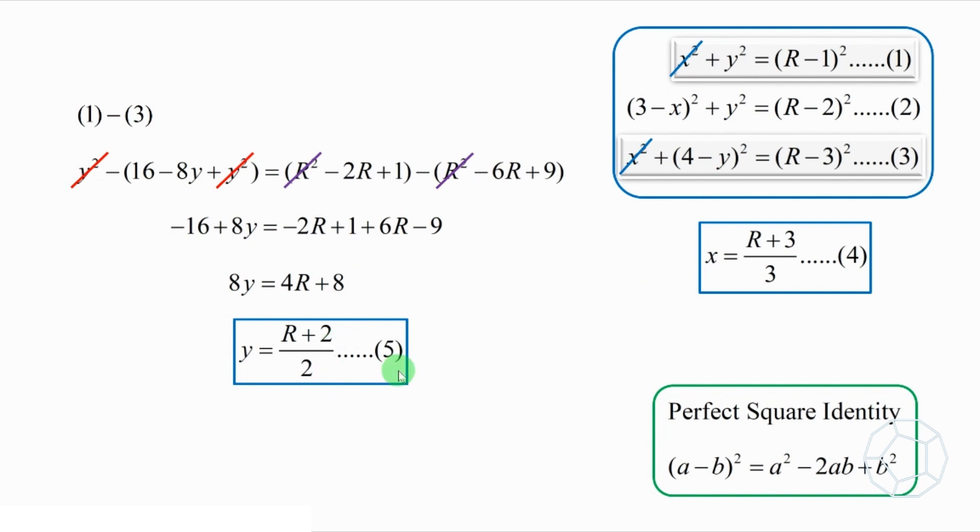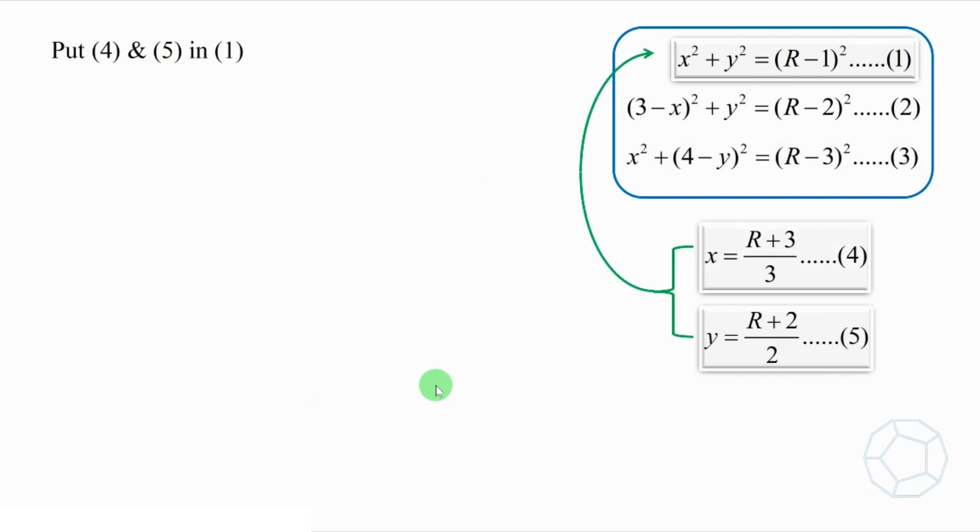Great! We get two nice and simple equations 4 and 5. The two unknowns X and Y are both in terms of R. Now we can put them in equation 1 so that there's only one unknown R. Which is R plus 3 over 3 whole square plus R plus 2 over 2 whole square is equal to R minus 1 whole square.